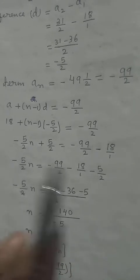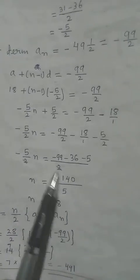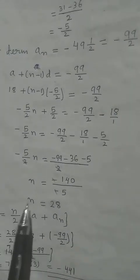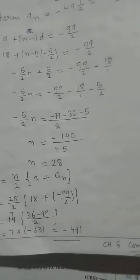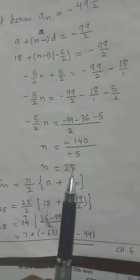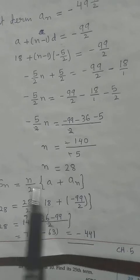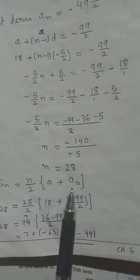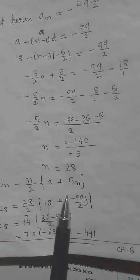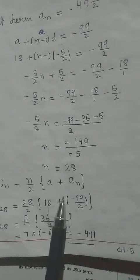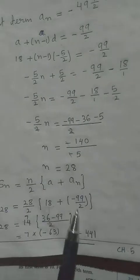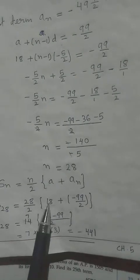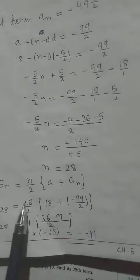After cancellation, N = 28 terms. Now finding S_N with N = 28, first term A = 18, and last term A_N = −49½ converted to improper fraction −99/2. We use the formula S_N = N/2 × (A + A_N).